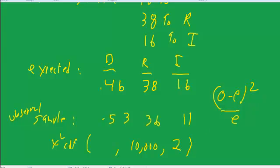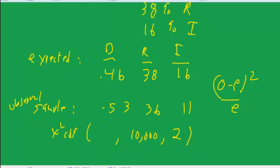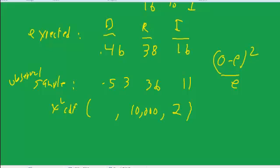So once again, we're not going to do all that stuff by hand. We'll do it in the calculator. There are a couple of ways to do this. One would be to calculate these expected numbers, put them in one list, put the observed in another list, and then tell the calculator to do a chi-squared goodness of fit test. That's perfectly fine.